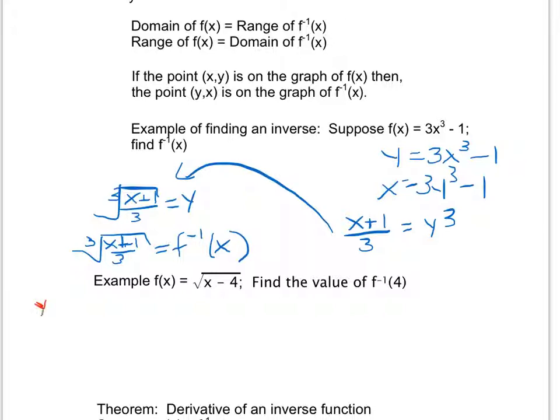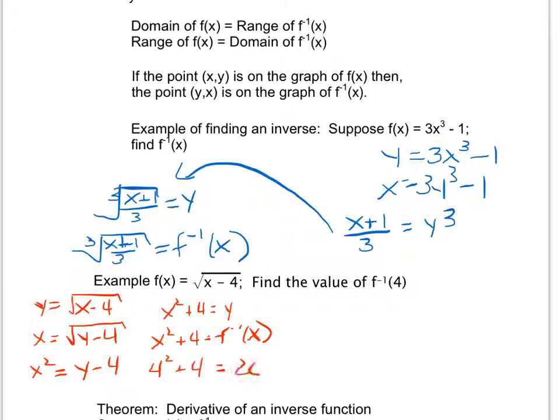So I can say that y equals the square root of x minus 4. Flopping x and y around I then have x equals the square root of y minus 4. Solving for y I can square both sides. And then adding 4 to each side I end up with x squared plus 4 equals y, which means x squared plus 4 equals my f inverse of x.